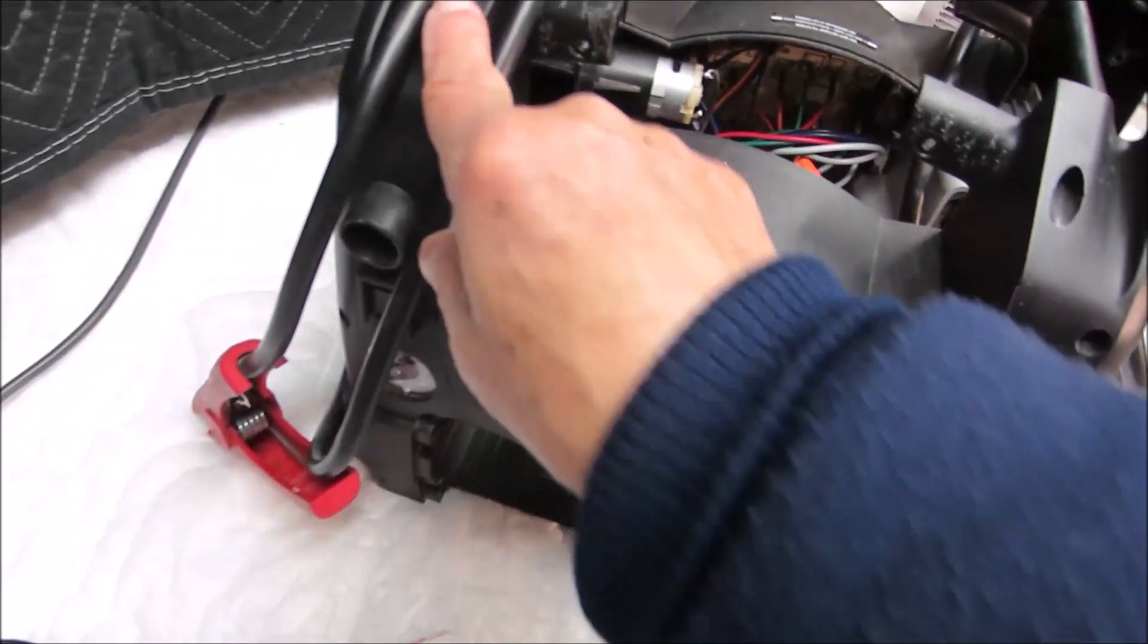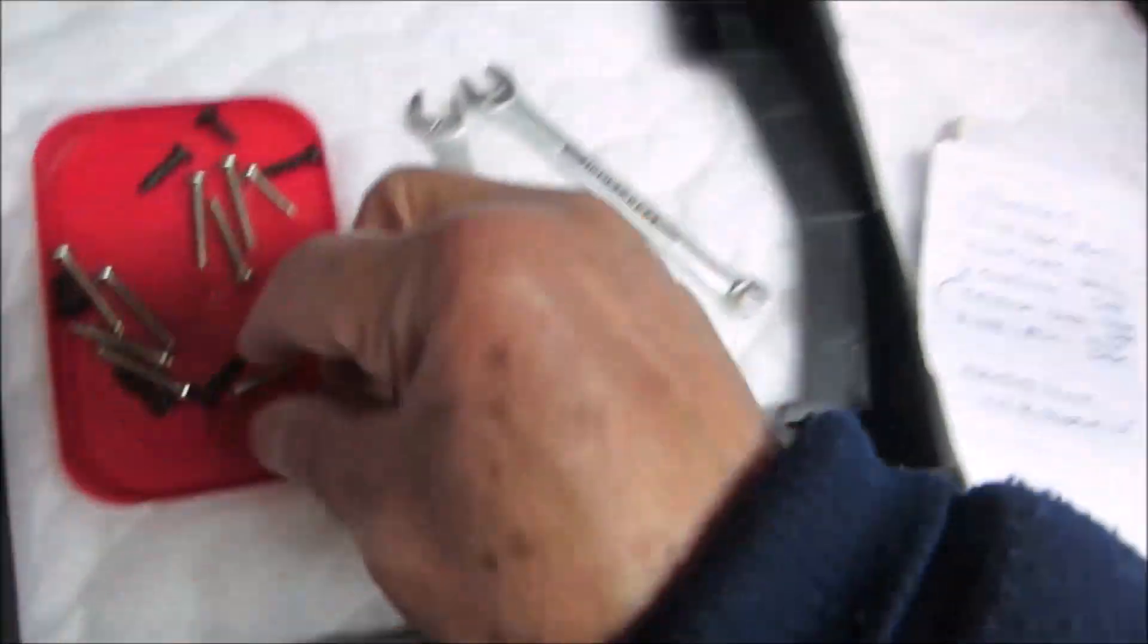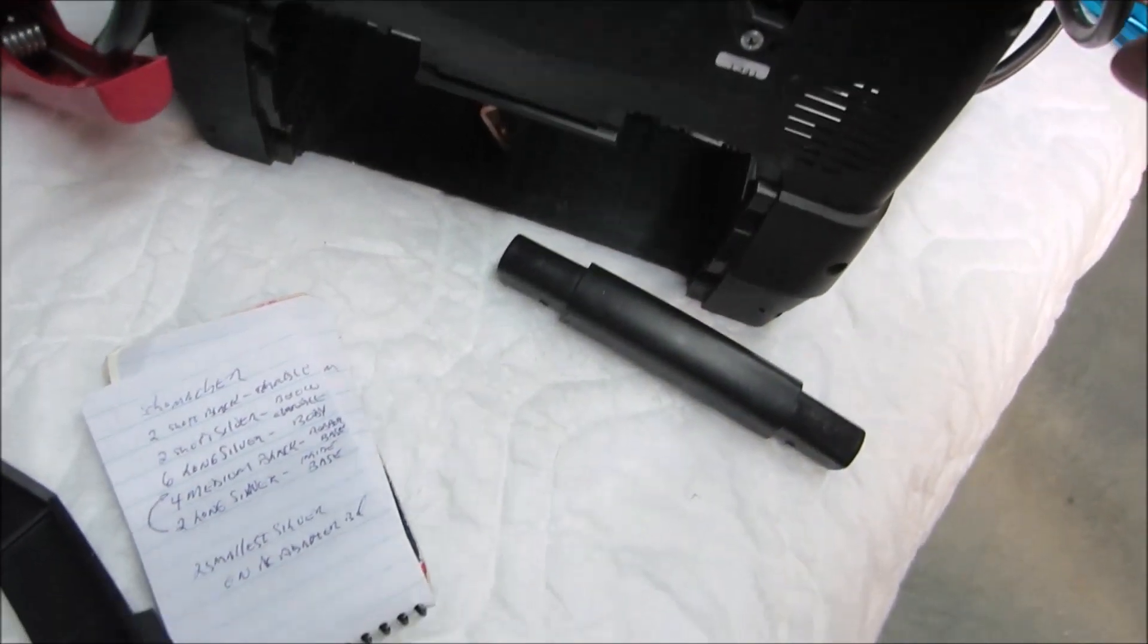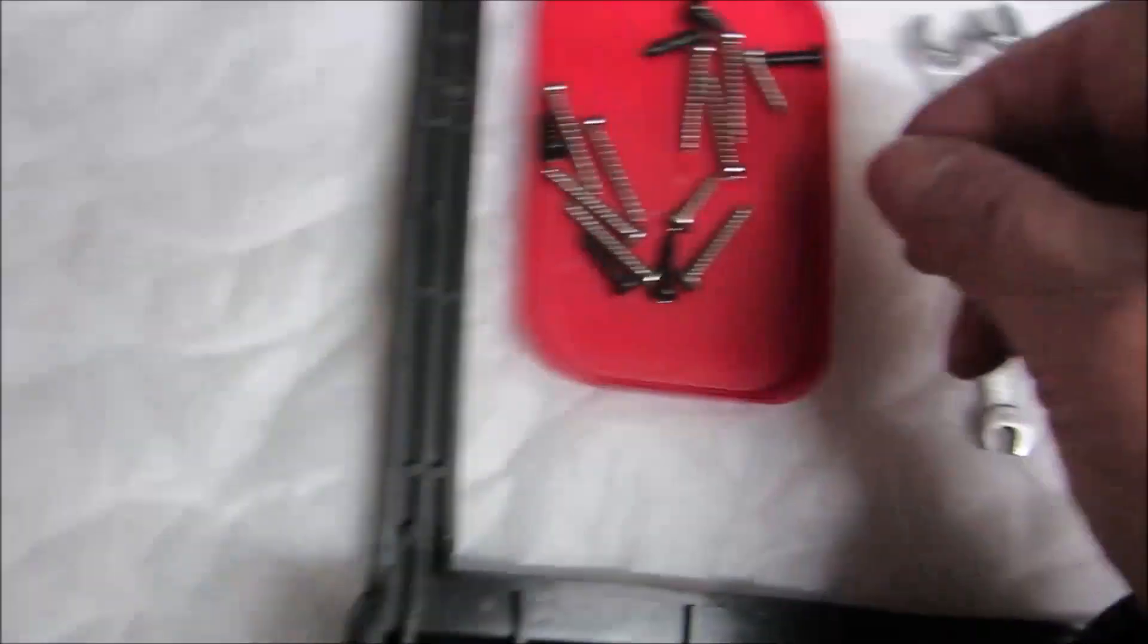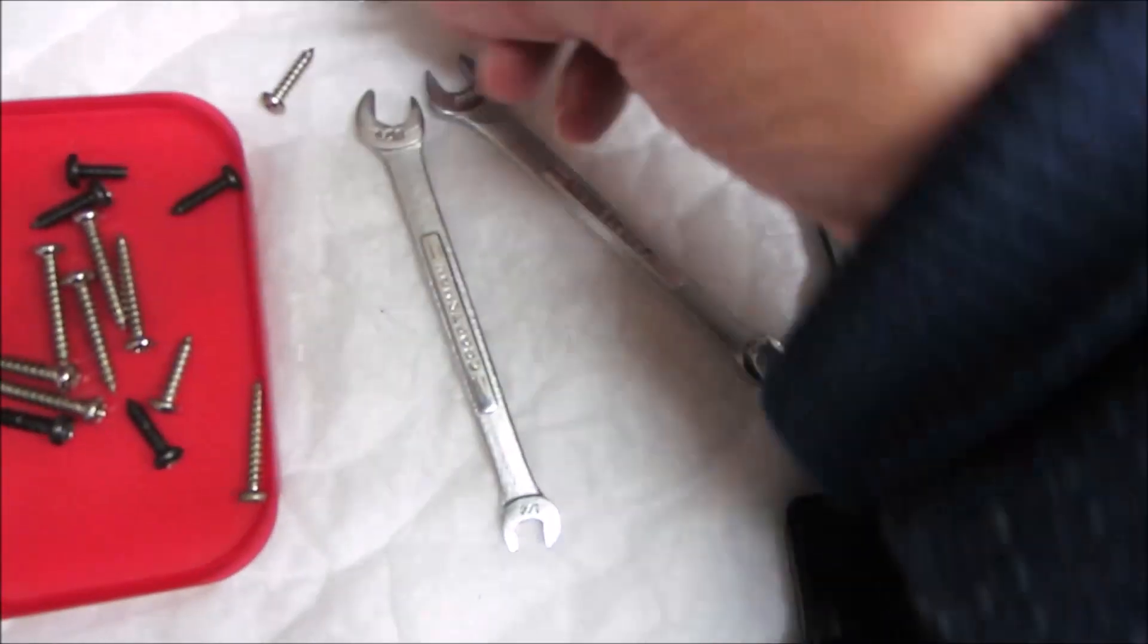Next we have two short silver screws right below the handle, and then below that we have six longer silver screws. See, short one, longer one.